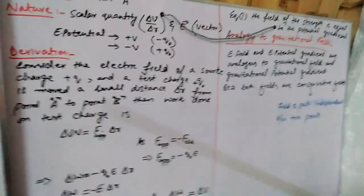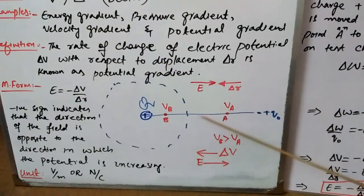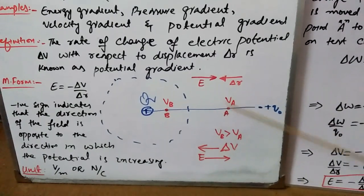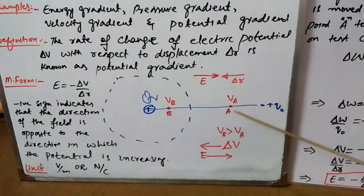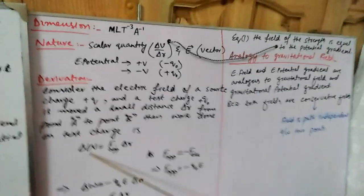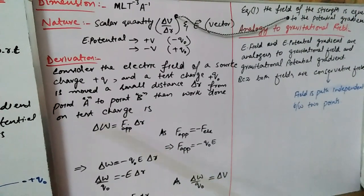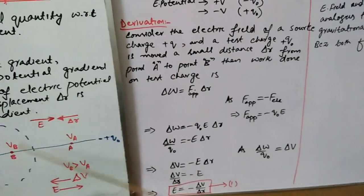Now we will see how we derived the mathematical relationship between electric field and potential gradient. We consider the figure already discussed and move the test charge from point A to B. Since the charge is positive, we have to do some external work for its displacement. The external work done on the test charge is ΔW = F_applied · Δr, where F_applied is the force used for moving the test charge and Δr is the displacement from A to B.